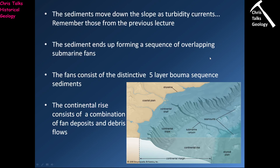These fans consist of five distinct layers, which we refer to as the Bouma sequence. The continental rise is a combination of these fan deposits and the occasional debris flow. Debris flow just means an underwater landslide. A lot of this material making up the continental rise will be dominated by muds with a little bit of sand. You will tend to have these Bouma sequences showing turbidite deposits, and you will occasionally get a chaotic deposit — a debris flow — produced when part of the continental slope drops off and slumps down onto the continental rise.